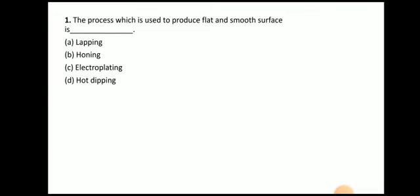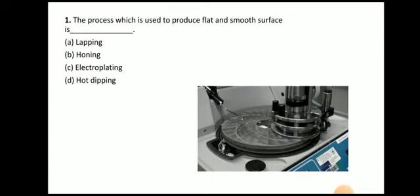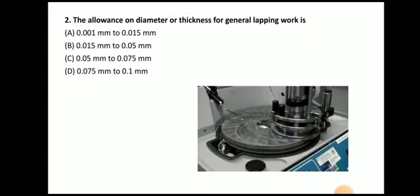The very first question: the process which is used to produce a flat and smooth surface is — lapping, honing, electroplating, or hot dipping. The answer is lapping. In the lapping process we can produce a flat and smooth surface. The allowance on a diameter or thickness for general lapping work is 0.015 mm to 0.05 mm.